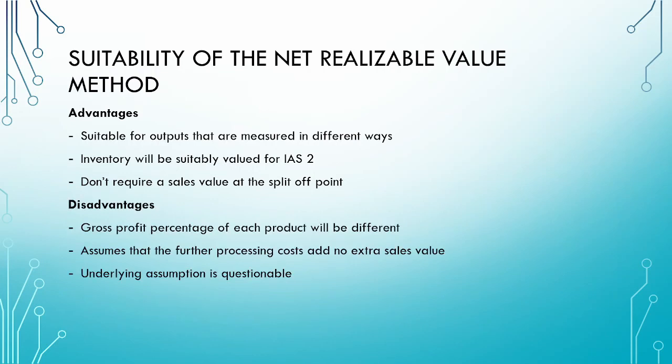However, this method does have some disadvantages. First, the gross profit percentage for each product will be different — a debatable point, as some feel products from the same process should have the same gross profit margin while others disagree. Second, the method assumes that the further processing costs add no extra sales value beyond the cost incurred. Finally, as with the sales value at split-off point method, the underlying assumption remains questionable.